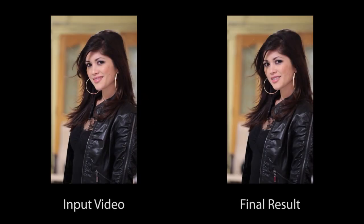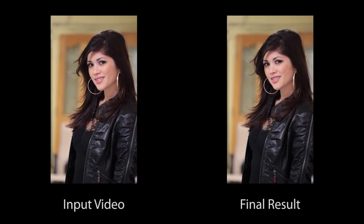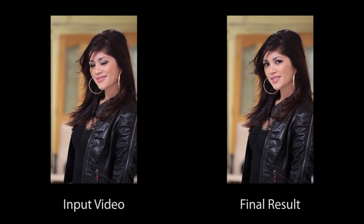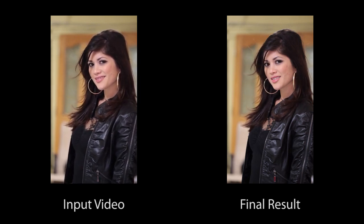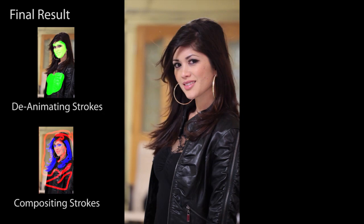In this example, we make a cinemagraph portrait of a person. We remove the large-scale motions of her head and torso, but keep motion in the hair and eyes. This example also loops seamlessly. We use green strokes to immobilize the face and torso, red strokes to make the torso and background static, while blue strokes preserve motion in the eyes and hair.